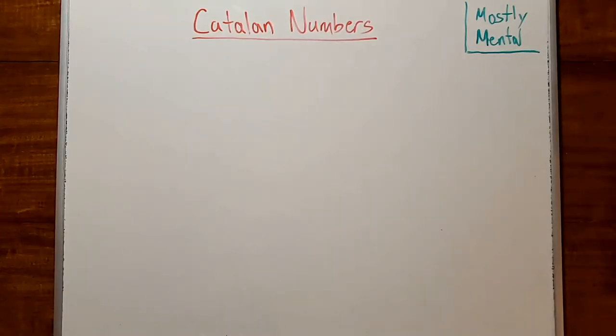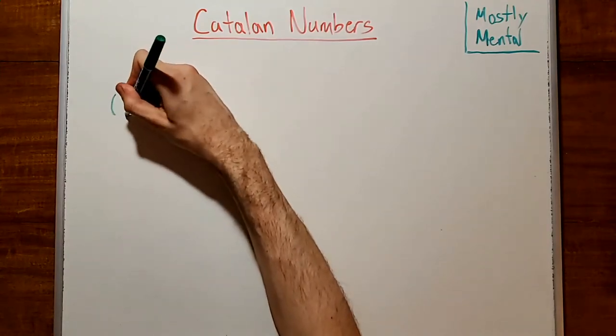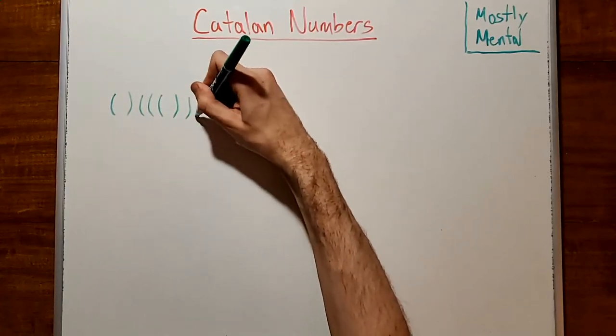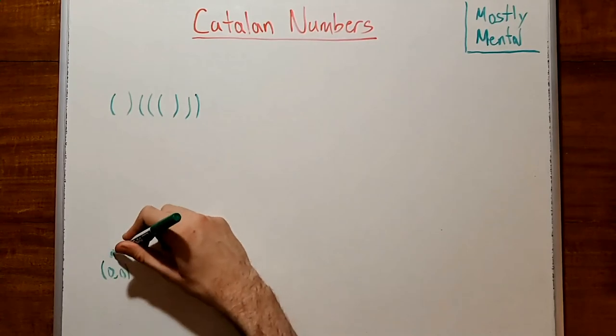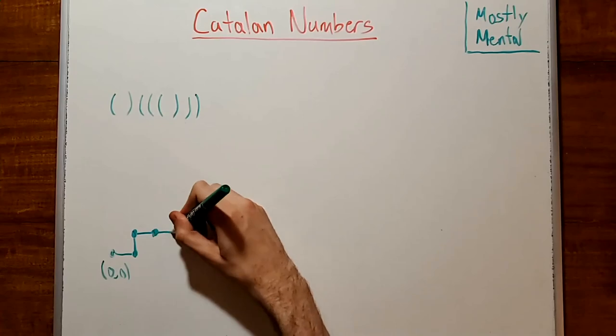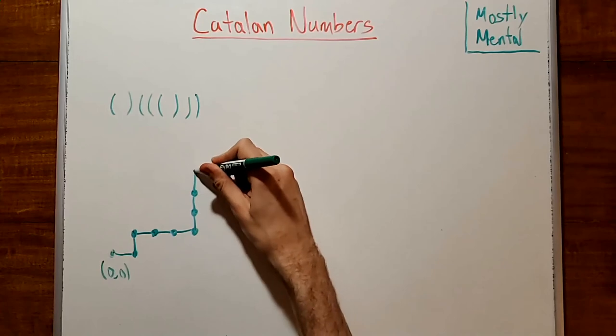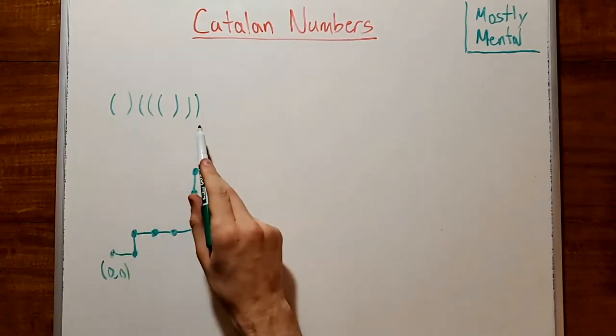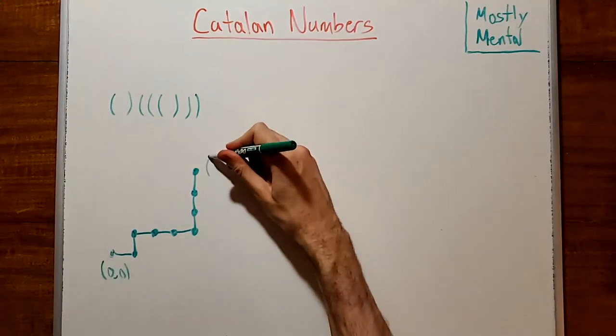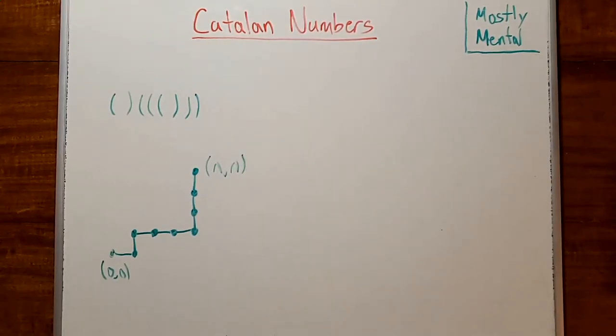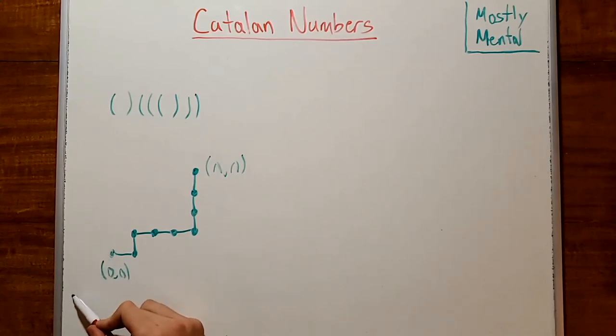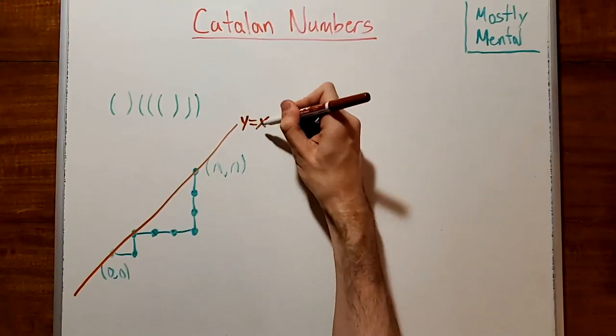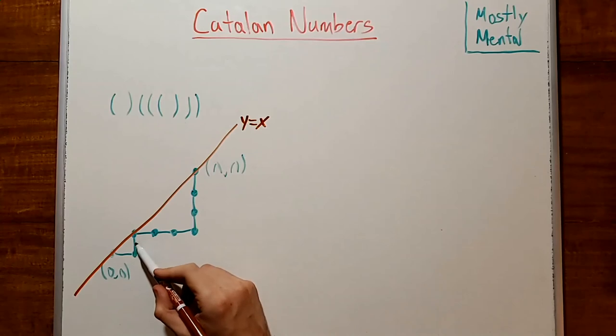There's another very nice formula for the Catalan numbers which we can see using something known as the principle of reflection. To get there, we'll first need to reinterpret the Catalan numbers one more time. So instead of counting strings of open and close parentheses, we'll instead count paths starting at the origin composed of steps right and steps up. So a string with n open parens and n close parens corresponds to a path from 0, 0 to n, n, and our restriction that a string be balanced corresponds to a restriction that our paths never cross the line y equals x. They may intersect as they do here, but they can never pass above it.